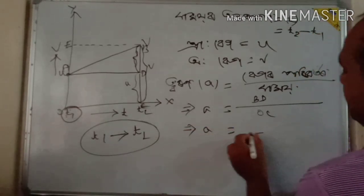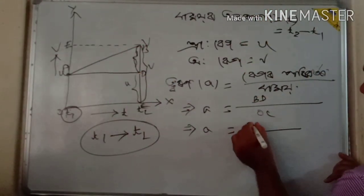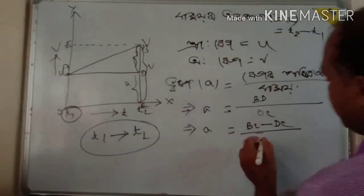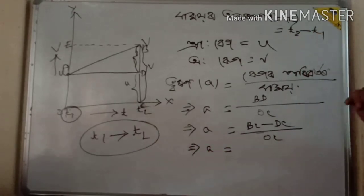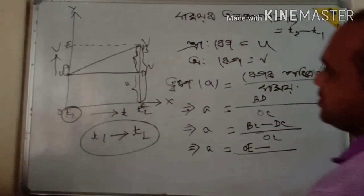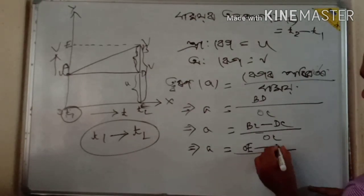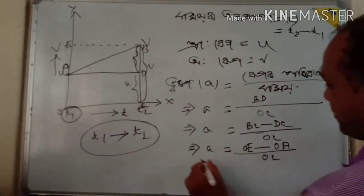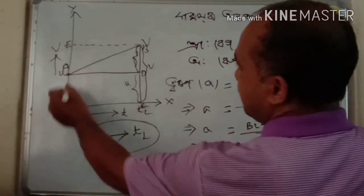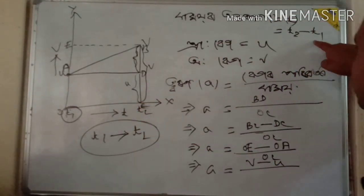Next step. This is bd. This bd is equal to bc-dc. Next step: a equal to bc-dc. This is bc-dc.